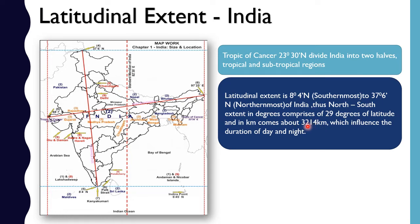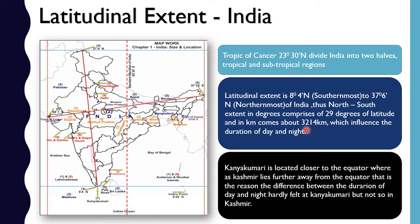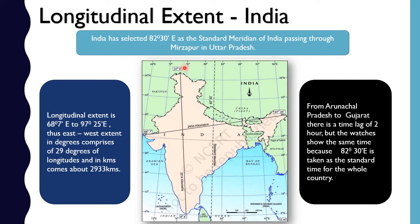Coming to the total area, it is 3.28 million square kilometers, which is 2.4 percent of the world's total area. India takes the seventh position in country size, after Russia, Canada, USA, China, Brazil, and Australia.